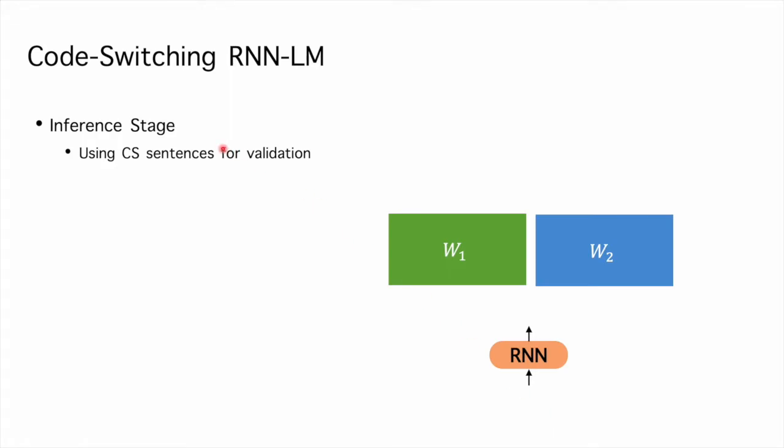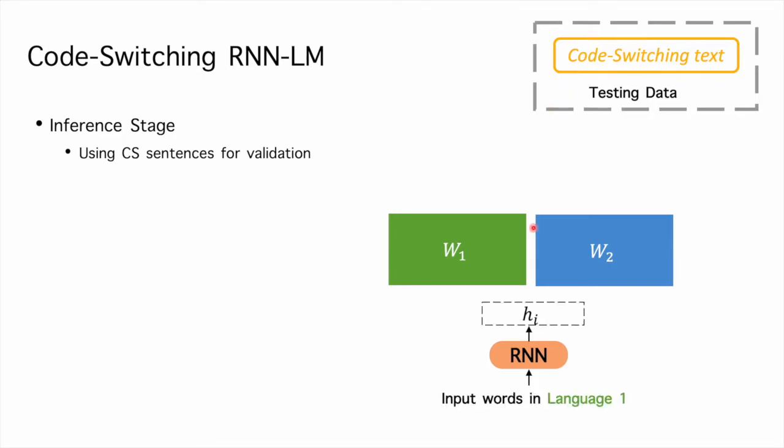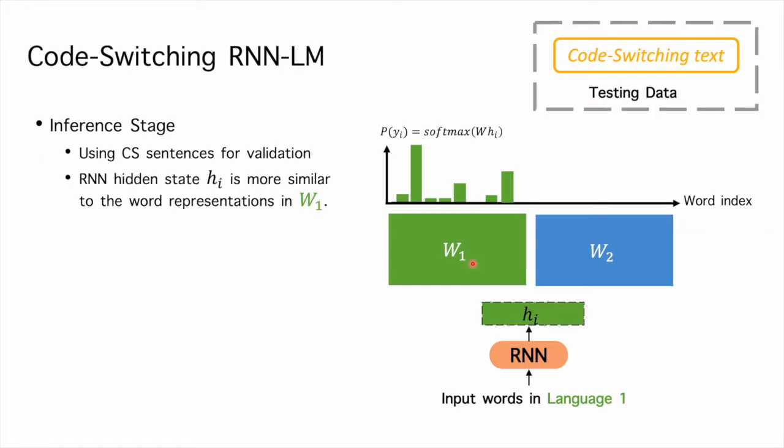At the inference stage, we use code-switching sentences for testing. When the prefix word in language 1 is fed into the model, the output word distribution would focus on the words in the same language, which implies the hidden state hi is more similar to the representation in W1 space.